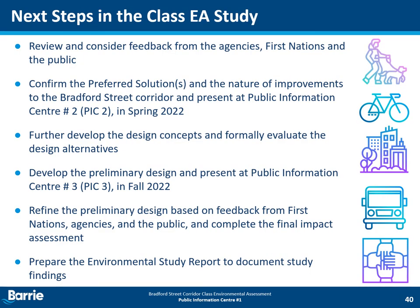After we receive and consider the feedback gathered from this PIC, the next step is to confirm the preferred solution and the nature of the improvements to the Bradford Street corridor. The outcomes of this step will be presented at PIC number 2 to be held this spring. Following the selection of the preferred solutions, we will move into Phase 3 of the EA process and the design concepts will be further developed and formally evaluated to identify the preferred design alternative. Preliminary design of the recommended plan will be presented at PIC number 3 planned for fall 2022. After this consultation milestone, the preliminary design and impact assessment will be finalized. Lastly, the environmental study report will be prepared to document the study findings.